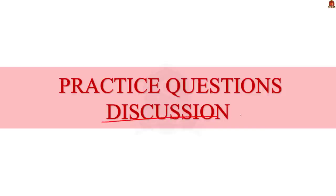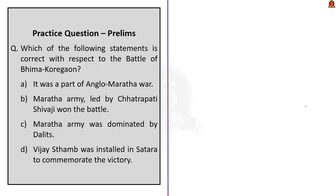Now let us move to the practice question discussion. Which of the following statements is correct with respect to the Battle of Bhima Koregaon? Statement A: it was a part of the Anglo-Maratha war. Statement B: Maratha army led by Chhatrapati Shivaji won the battle. Statement C: Maratha army was dominated by Dalits. Statement D: Vijay Stambh was installed in Satara to commemorate the victory. The correct answer is option A. The Battle of Bhima Koregaon was indeed part of the Anglo-Maratha war. Statement B is incorrect since the Maratha army was led by Peshwa Baji Rao II, not Chhatrapati Shivaji. Statement C is incorrect because it was the British army — not the Maratha army — that was dominated by Dalits from the Mahar community. Statement D is incorrect since the Vijay Stambh was installed in Pune, not Satara. Satara was the capital of the Maratha kingdom during the reign of Shivaji, Shahuji Raje, and Shahu Pratap Singh.